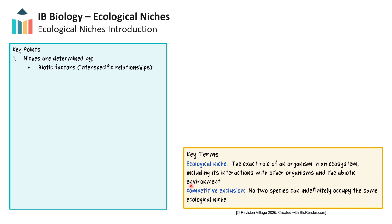This includes their habitat, or where they live, along with the behaviors they may have for mating, feeding, sleeping, and waking patterns, as well as interactions with other species. When we consider the interactions organisms have with other organisms in the environment, we can refer to these as biotic factors.